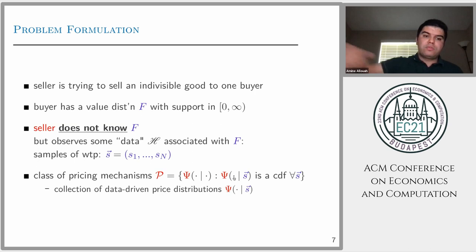The historical data in this problem will assume that the seller has access to some previous samples, S1 to SN. The seller needs to decide, given the samples, which price or distribution of prices to post to this buyer. This is what the seller is controlling. This is a fairly simple problem to state, but as we'll see, it's non-trivial to study.